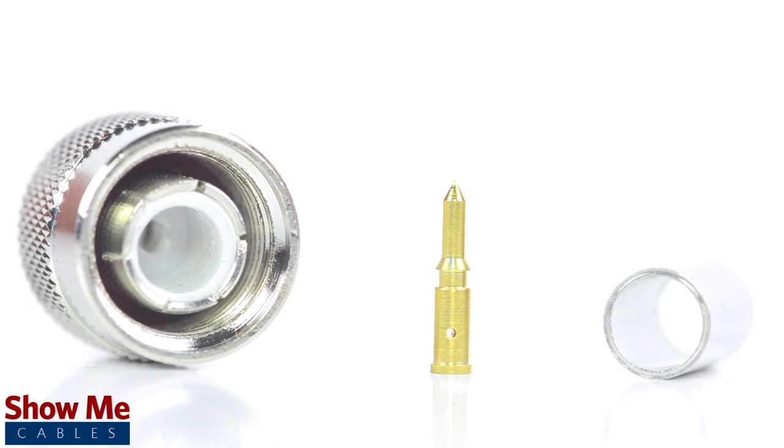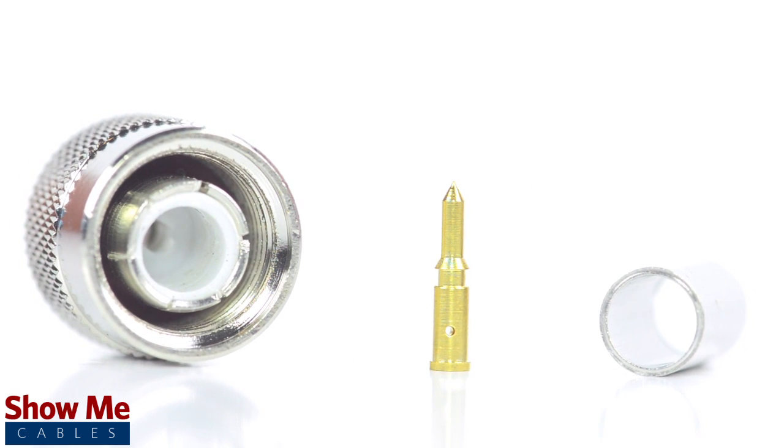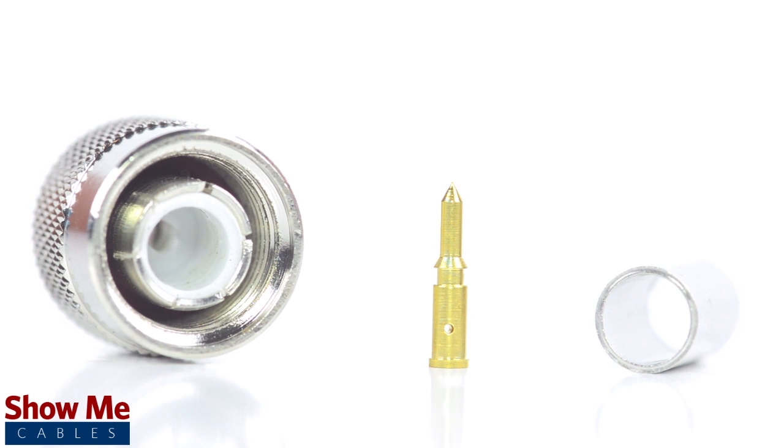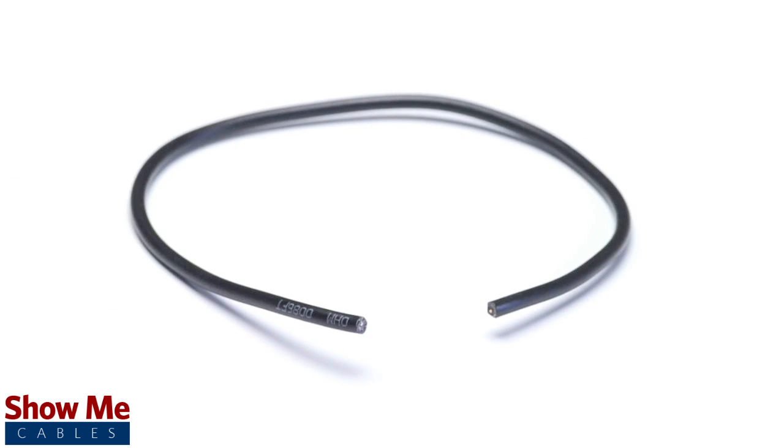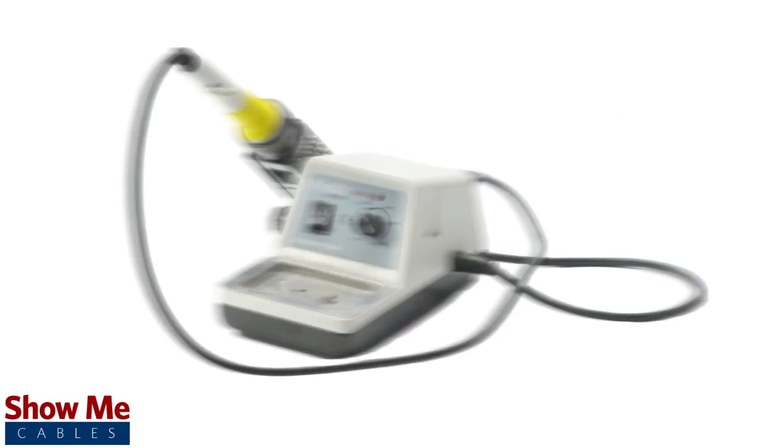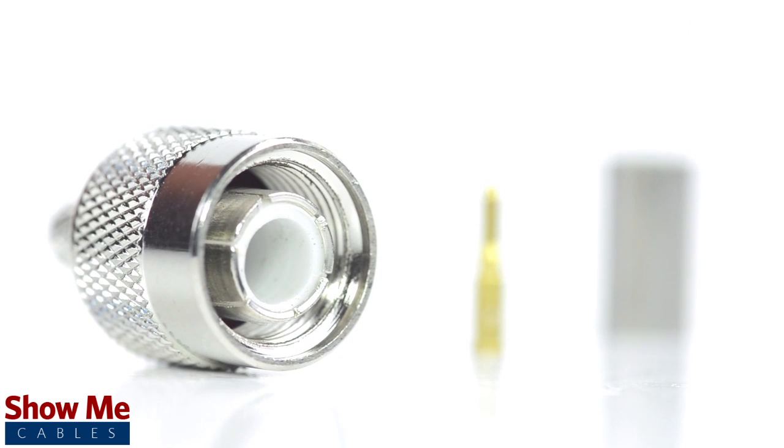The three-piece connector consists of the connector housing, the pin, and the ferrule. For this installation you will need a coax stripper, coax cable, a soldering iron, a crimp tool, and the TNC connector.